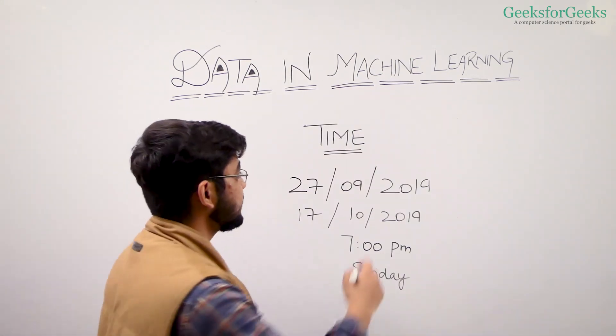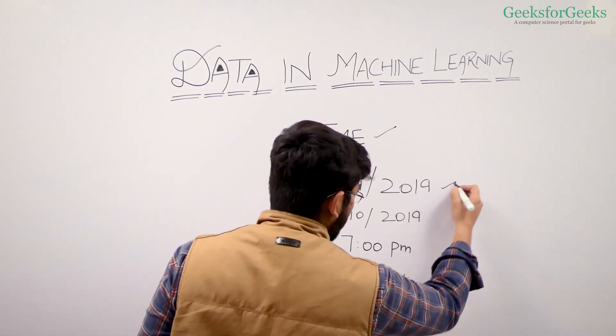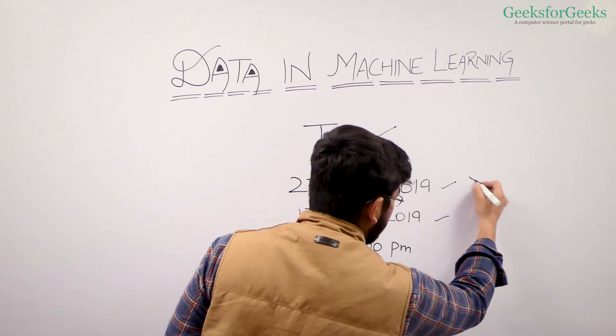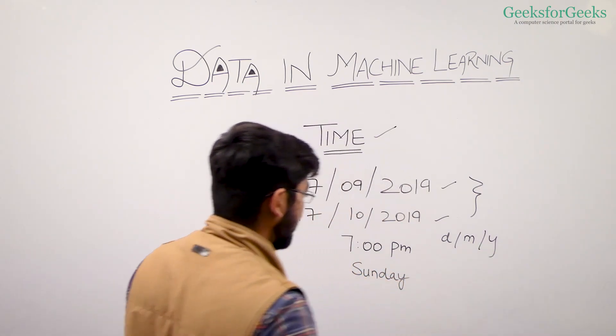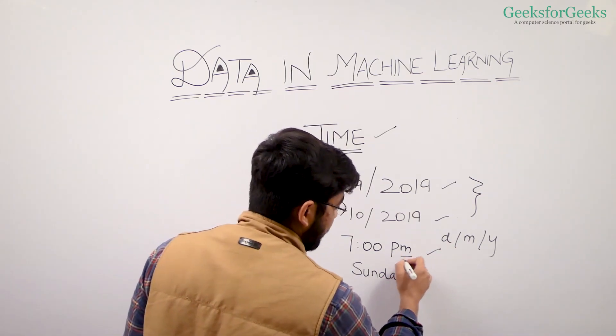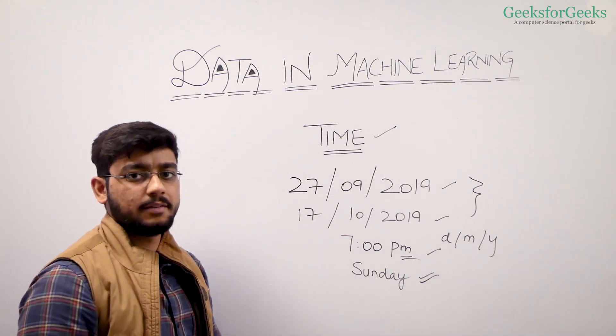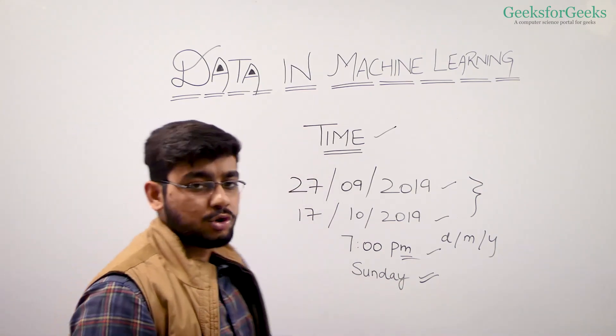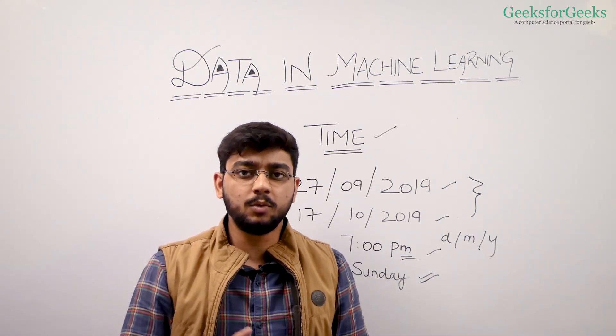The last term we are talking about is time data. In case of this data we can have dates, for example 27 September 2019, 17 October 2019 - date formats in the form date, month, and year. Also we can have this data in the form of time with clear distinguishable AM or PM and the week, whether this weekday was Sunday, Tuesday, Friday. This is the kind of data that comes under time domain. So this was all about data, why data is important, and the different types of data we have.